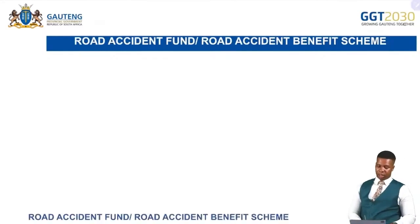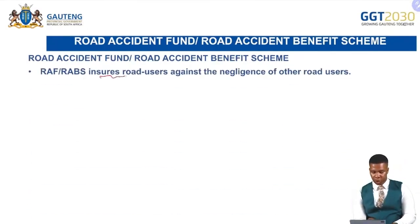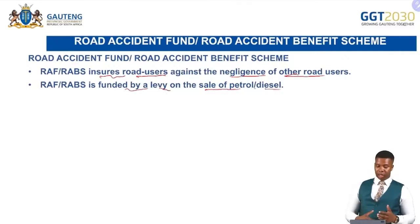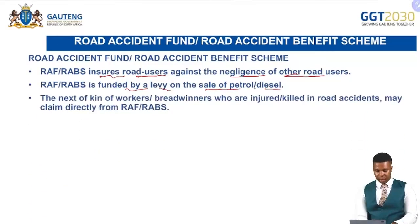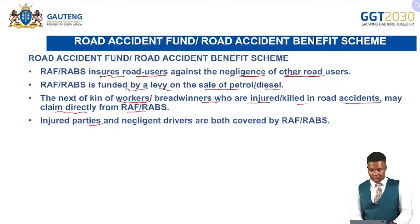The Road Accident Fund ensures road users against negligence of other road users that leads to accidents. The fund is funded by a levy on the sale of petrol or diesel — every time someone buys fuel, there is a contribution to the Road Accident Fund. The next of kin of workers or breadwinners who are injured or killed in a road accident may claim directly from the fund. Both injured parties and negligent drivers are covered by the Road Accident Fund.